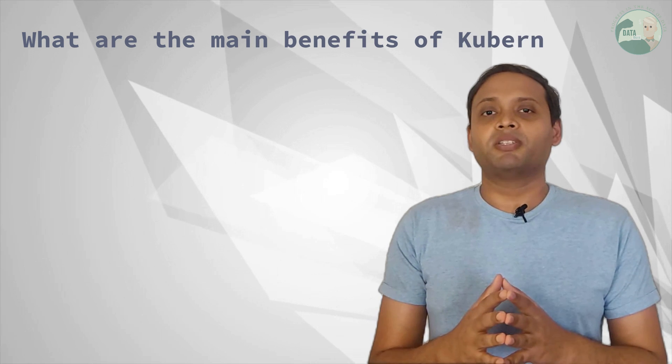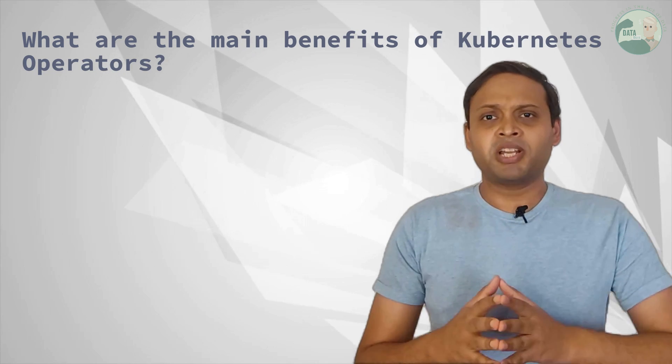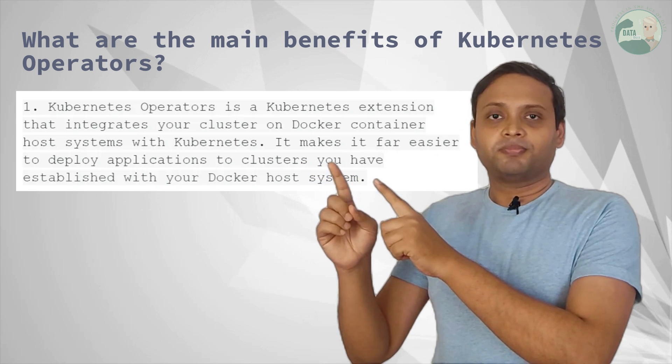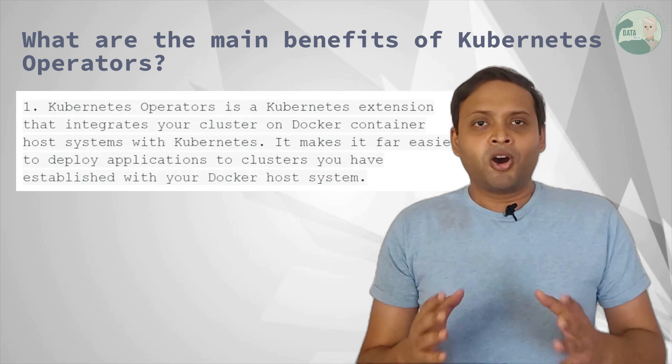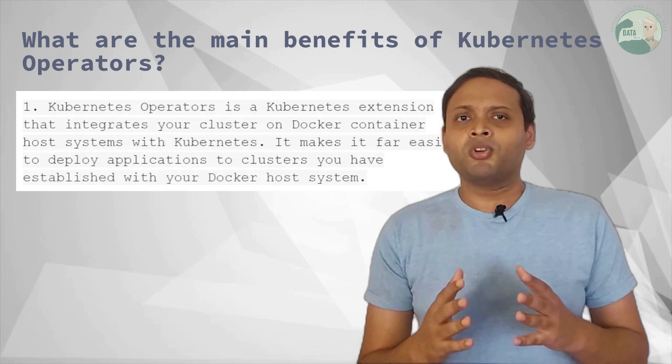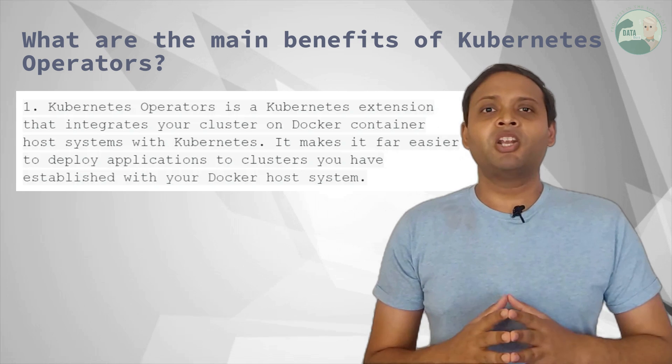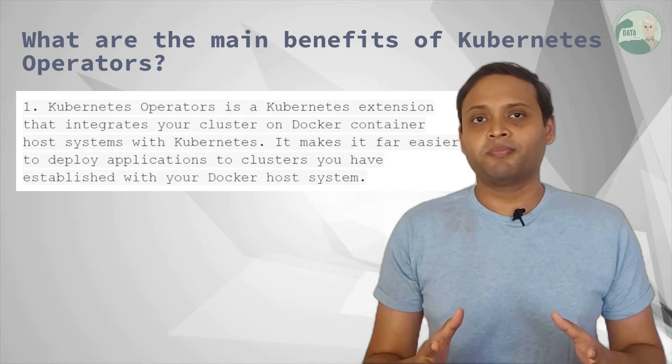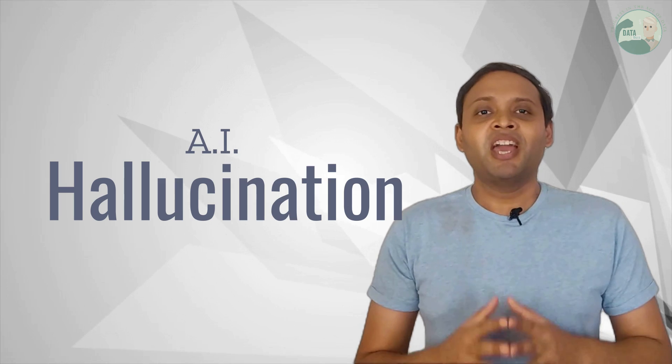Let's look at the example. I had asked ChatGPT same question twice. What are the main benefits of Kubernetes operators? First time, it gave me this answer. If you read it thoroughly, though it looks good, but it is not 100% correct. A DevOps people would know that Kubernetes operators are not an extension of Kubernetes and Docker is not required. This is called AI hallucinations.